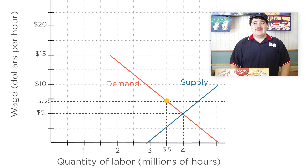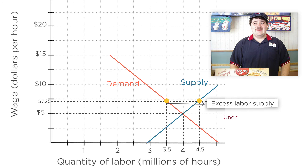And what happens to the supply of workers? To answer this, we use the supply curve. At a wage of $7.25, workers want to supply 4.5 million hours of labor. People who weren't willing to take a job at Burger King for $5 an hour are now interested as the wage has gone up to $7.25. So workers want to supply 4.5 million hours of labor, but restaurants only demand 3.5 million. There's an excess supply of labor — better known as unemployment. These people want to work for the new wage, but the restaurants don't need that much labor, so these people don't get hired.